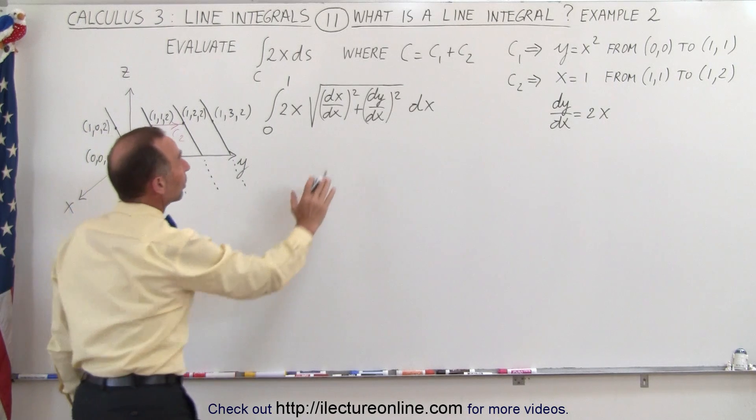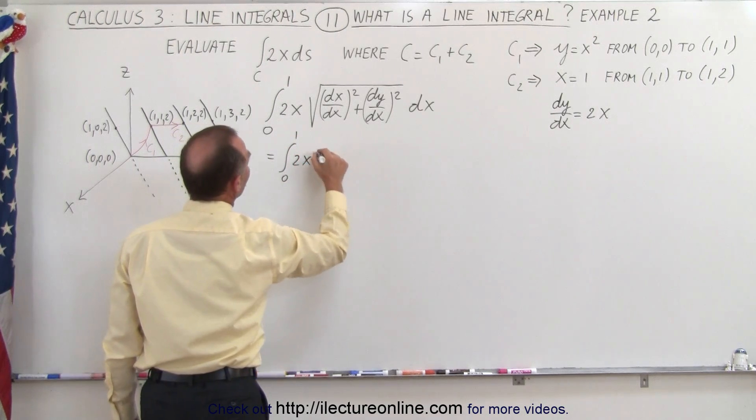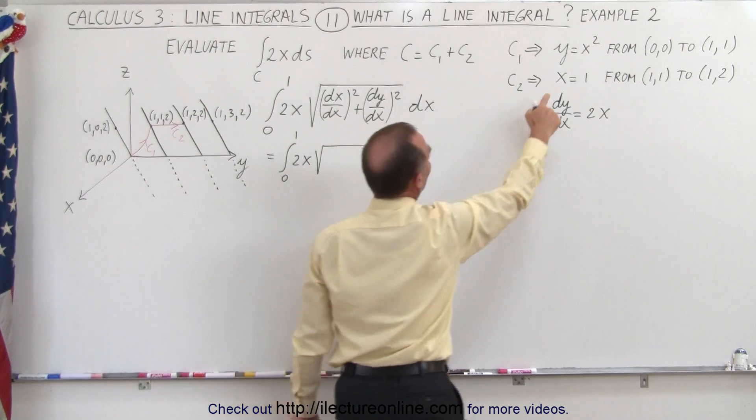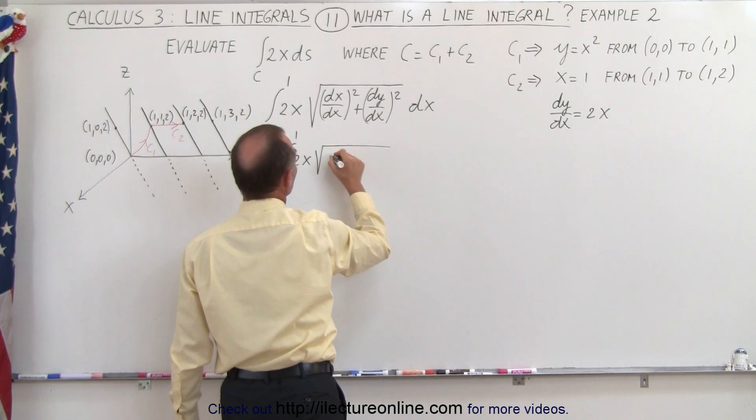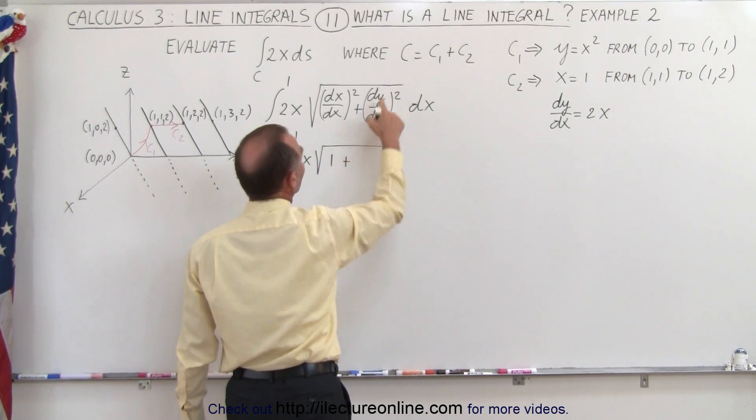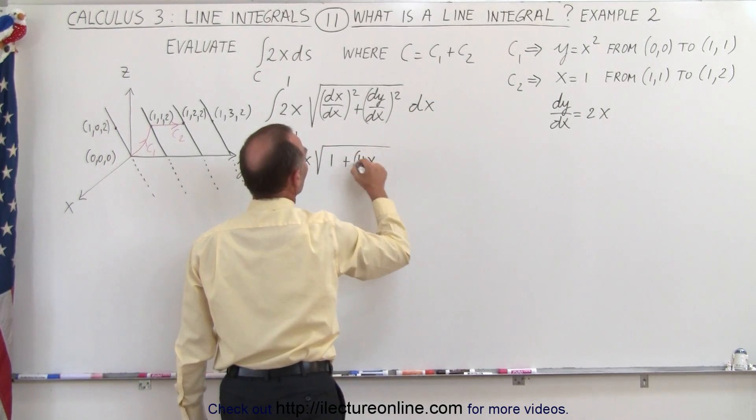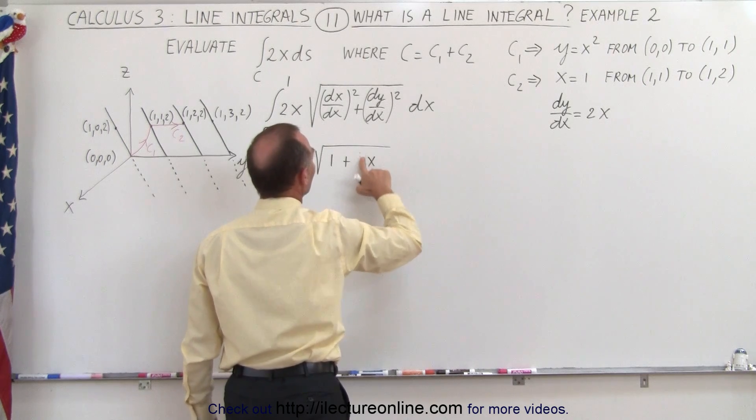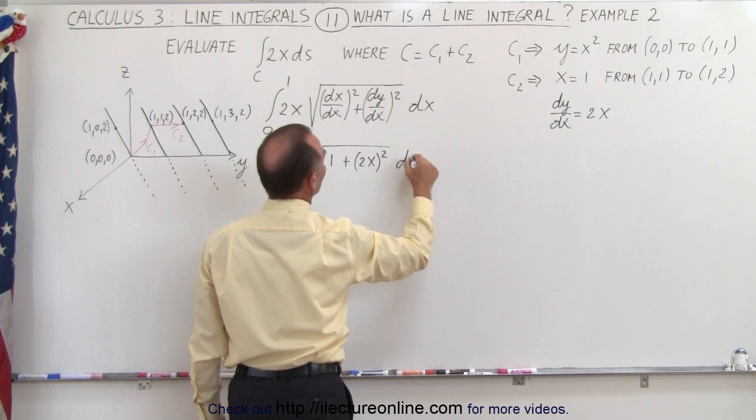Now we go ahead and plug in what this is equal to. So this becomes equal to the integral from 0 to 1 of 2x times the square root of, now dx/dx, since x is equal to, let's see, dx/dx, well that's just going to be 1. So that's 1 squared, so that's 1, plus dy/dx is 2x squared, that becomes 4x quantity. I'll go ahead and put it like this, this is going to be 2x quantity squared. I got a little ahead of myself, times dx.